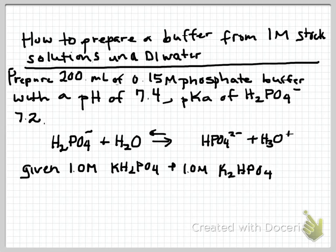In this problem I want to prepare 200 mL of a 0.15 molar phosphate buffer with a pH of 7.4 given that the pKa of the H2PO4 minus phosphate ion is 7.2.